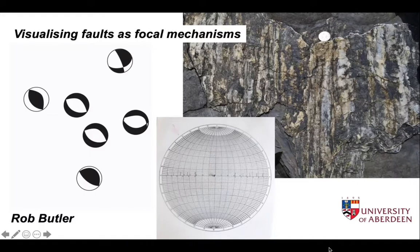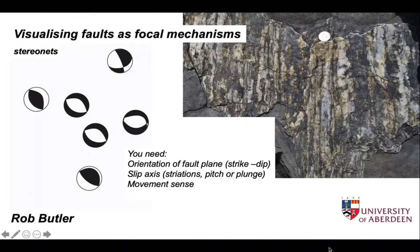We're going to do this using the stereographic projection. We'll need the orientation of the fault plane — its strike and dip — an indication of its movement axis, which normally will be portrayed by striations. We'll measure these with the pitch on the plane or as a plunge. We also need an idea of the movement sense: for dip-slip faults, whether they're normal or thrust sense, or for strike-slip faults, whether right lateral or left lateral.